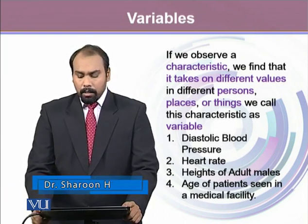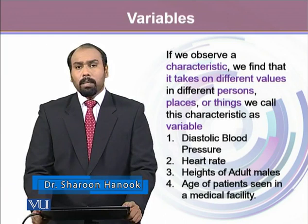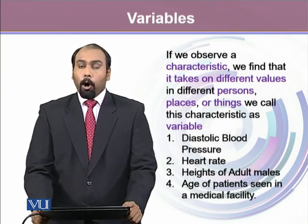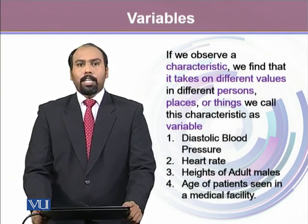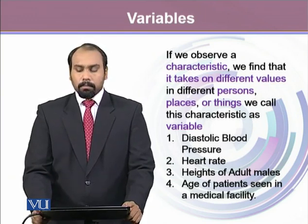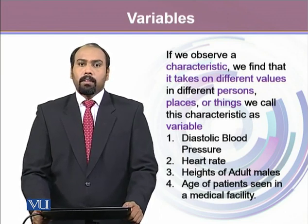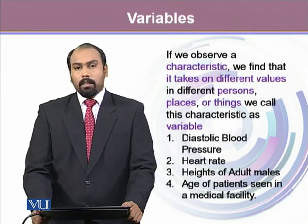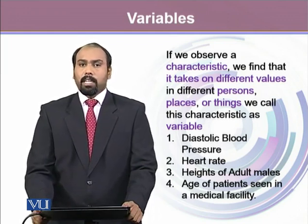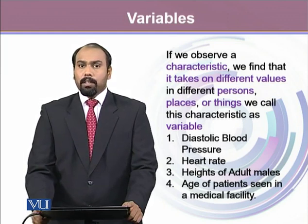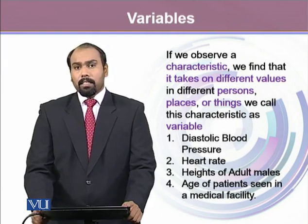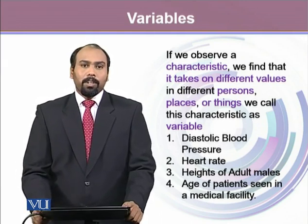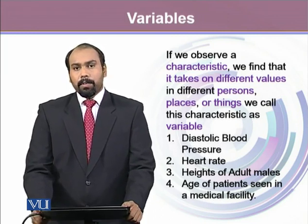For example, diastolic blood pressure of multiple patients coming into a hospital — not all patients have the same diastolic or systolic blood pressures. Heart rate also differs: every individual has a different heart rate. Heights of adult males vary too — some are shorter, some are taller, some are of medium height. Every individual in our population or sample has different information, which brings in variation. Similarly, age of patients seen in a medical facility is also not the same for all individuals recruited in a study.